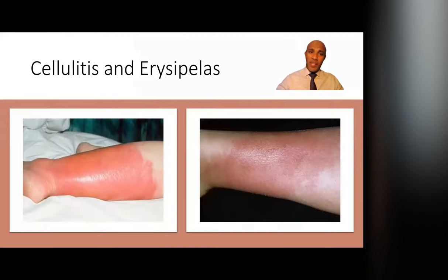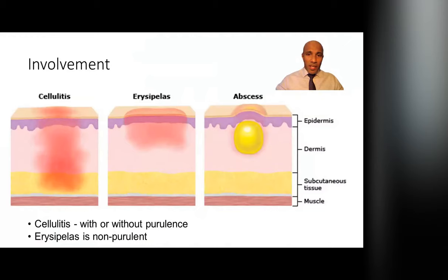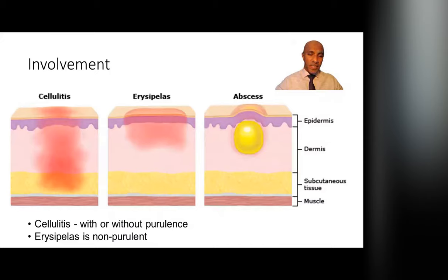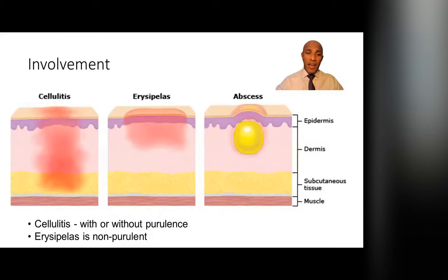What's the difference between cellulitis and erysipelas? The image on the left shows erysipelas and the one on the right shows cellulitis. The difference is in the layers or depth of involvement. Cellulitis extends from the epidermis through the dermis and up to the subcutaneous tissue — remember it does not involve the fascia. Erysipelas, on the other hand, is confined to the epidermis and the superficial dermis. This is why erysipelas has a very clear, almost palpable demarcation, compared to cellulitis which has a vague border. Additionally, cellulitis can be with or without purulence, whereas erysipelas is always non-purulent.